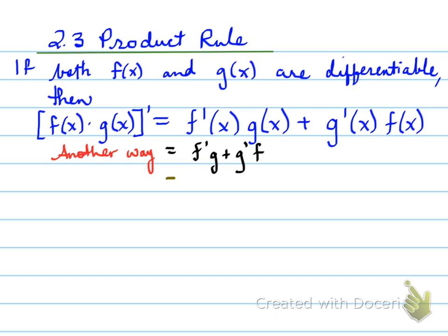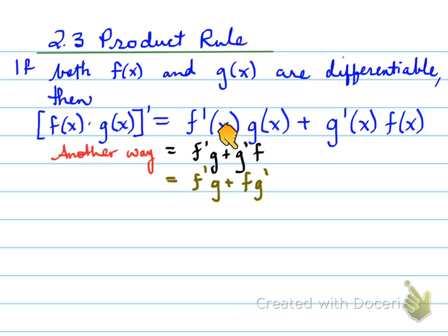Some students will look at f prime g and g prime f and wonder if there's another way — and you can. Some have understood it as f prime g plus f g prime. Ultimately, all you're trying to do is find the derivative of one multiplied by the other function, then the derivative of the other function multiplied by the first. Remember the method, not just the formula — this is retained longer in your understanding of how to take derivatives.